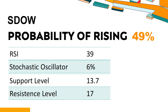What are the key technical drivers for SDOW? SDOW's 14-day Relative Strength Index (RSI) value was 39. When the RSI is above 25 and below 50, it generally indicates that the stock is moderately bearish. This means that the security's price has been falling but has not yet reached oversold levels, typically considered an RSI reading of 25 or lower.